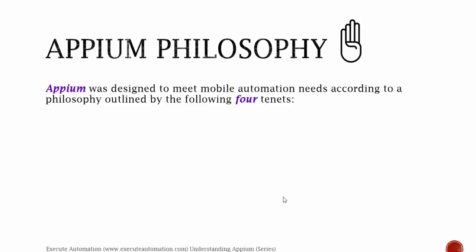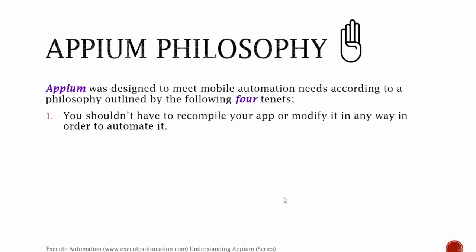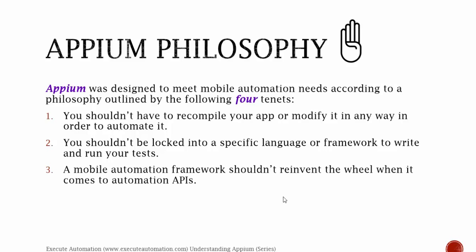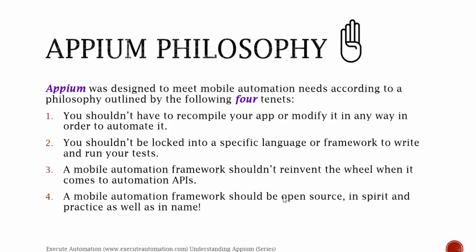Appium has got its own philosophies. Appium was designed to meet mobile automation needs according to a philosophy outlined by four tenants: you shouldn't have to recompile your app or modify it in any way to automate it; you shouldn't be locked into a specific language or framework to write and run your tests; a mobile automation framework shouldn't reinvent the wheel when it comes to automation APIs; and a mobile automation framework should be open source in spirit and in practice as well as in name. We're going to discuss all four philosophies in greater detail in upcoming slides.